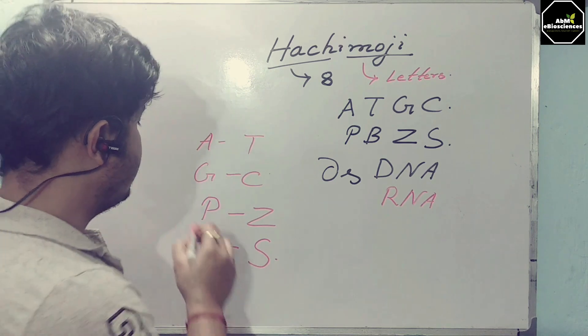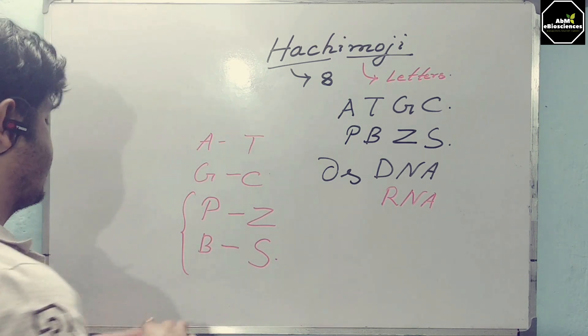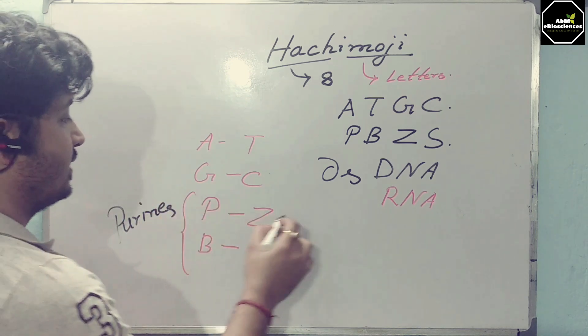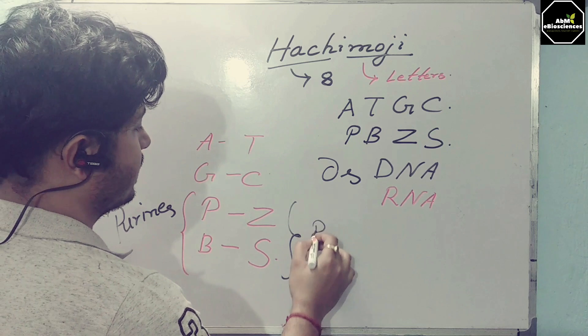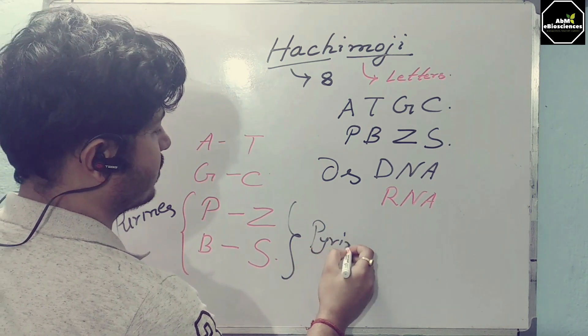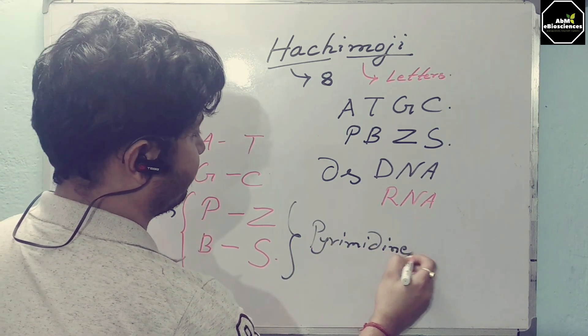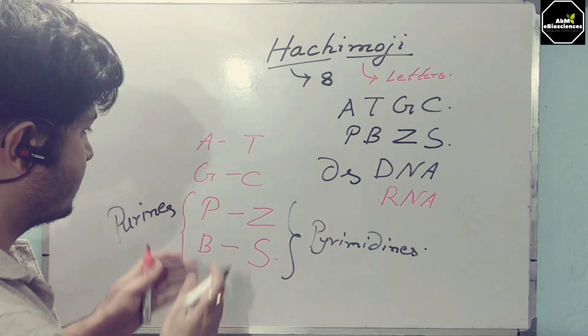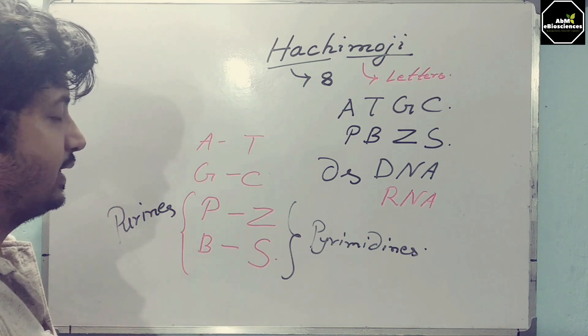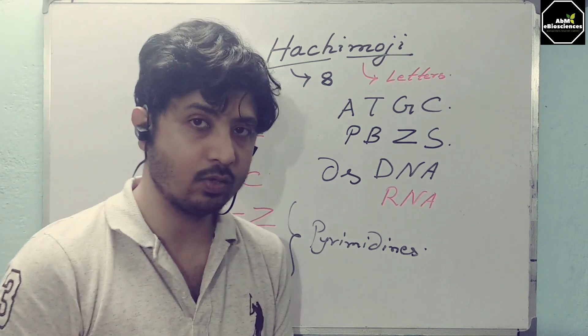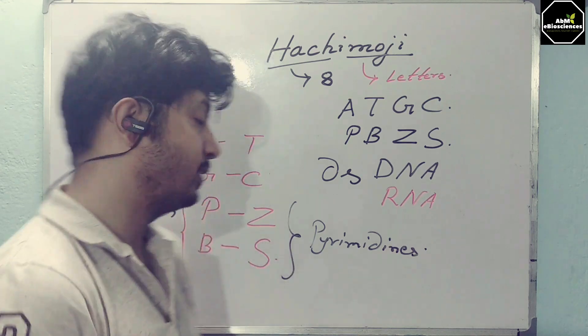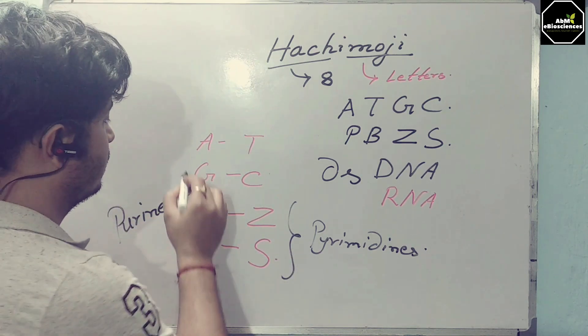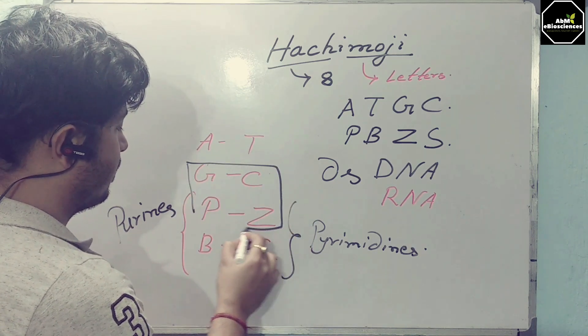...P bonds with Z as B bonds with S. Now this P and B can be considered as purines, and this Z and S can be at similar levels of pyrimidines. This P-Z interaction can be directly compared according to the research article to G-C, so PZ and GC can be compared.